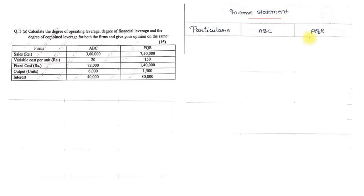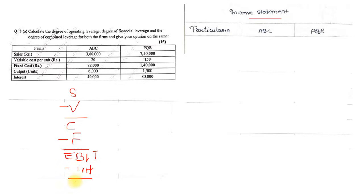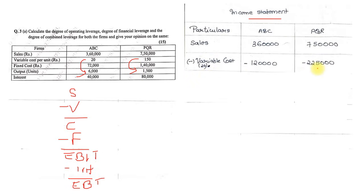We start by preparing an Income Statement for both firms. The format is: Sales, less Variable Cost = Contribution; less Fixed Cost = EBIT (Earning Before Interest and Tax); less Interest = EBT (Earning Before Tax). Sales are 3,60,000 for ABC and 7,50,000 for PQR. Variable cost per unit is Rs. 20 for ABC with 6,000 units, and Rs. 150 for PQR with 1,500 units, giving variable costs of 1,20,000 and 2,25,000 respectively.